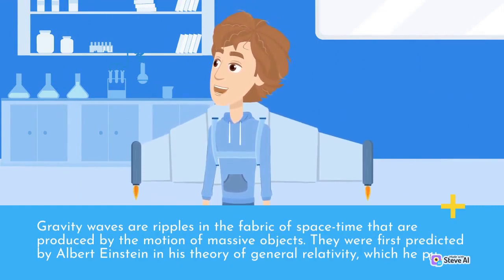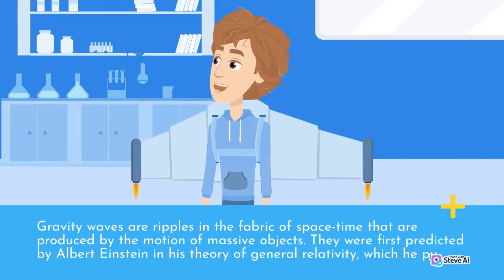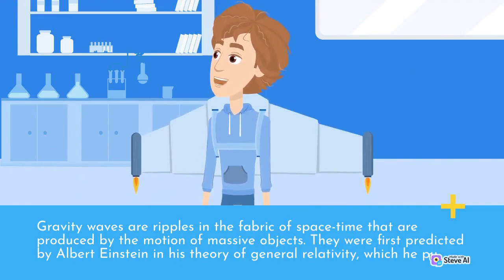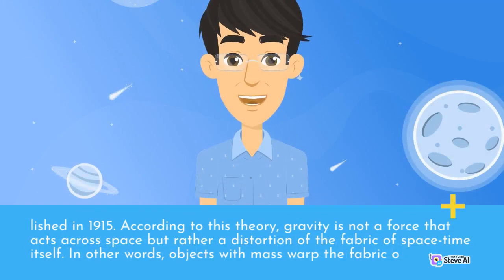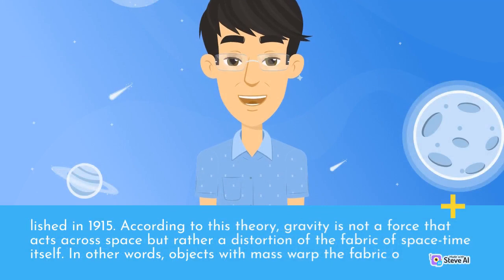Gravity waves were first predicted by Albert Einstein in his theory of general relativity, which he published in 1915. According to this theory, gravity is not a force that acts across space but rather a distortion of the fabric of spacetime itself.